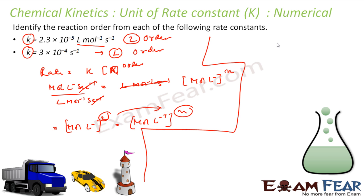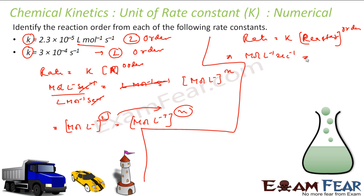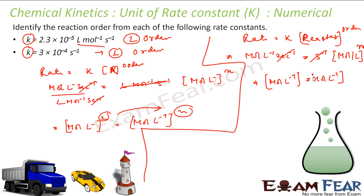For the second part, if K is given as per second: rate = K × [reactant]^N. Rate is moles per liter per second, K is per second, reactant is moles per liter to the power N. After seconds cancel, moles per liter = (moles per liter)^N, so N = 1 — first order reaction.